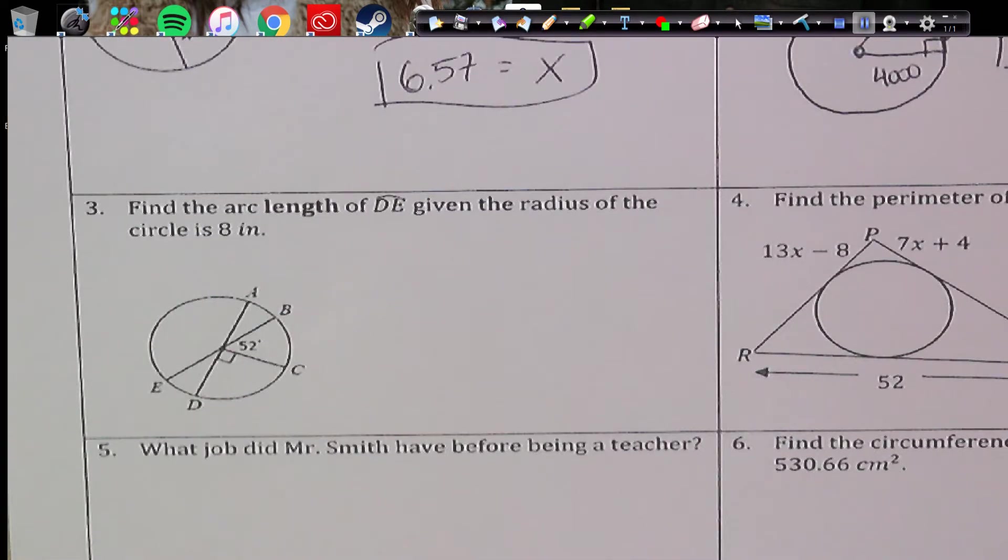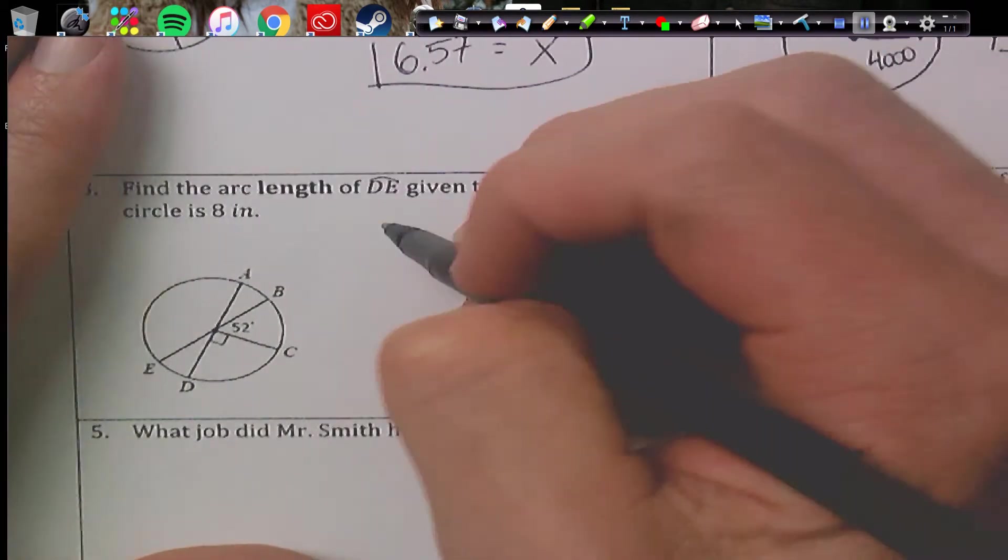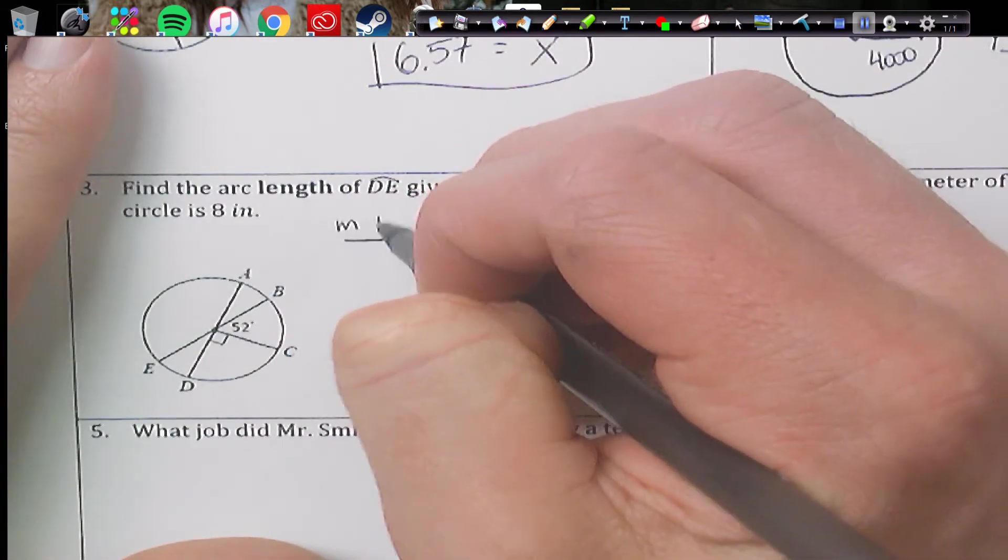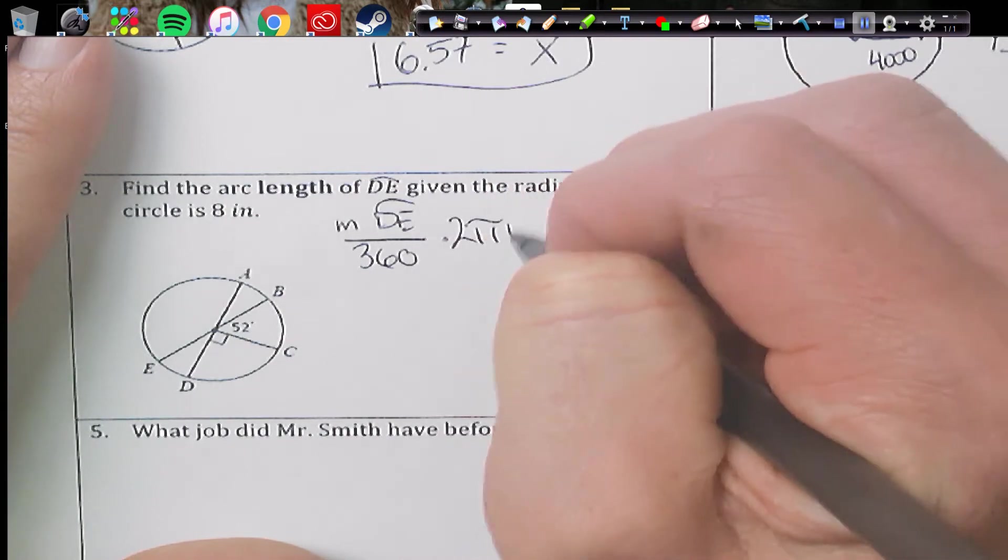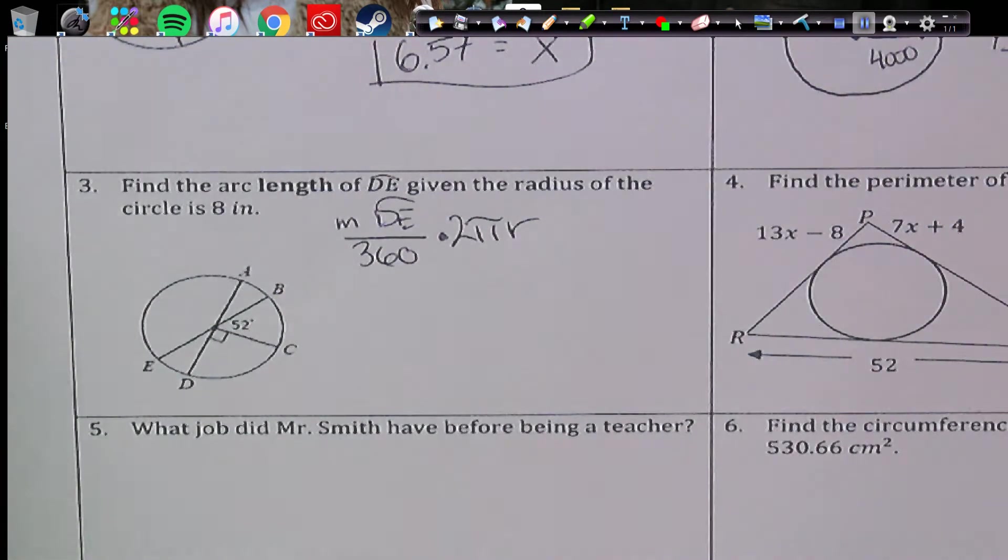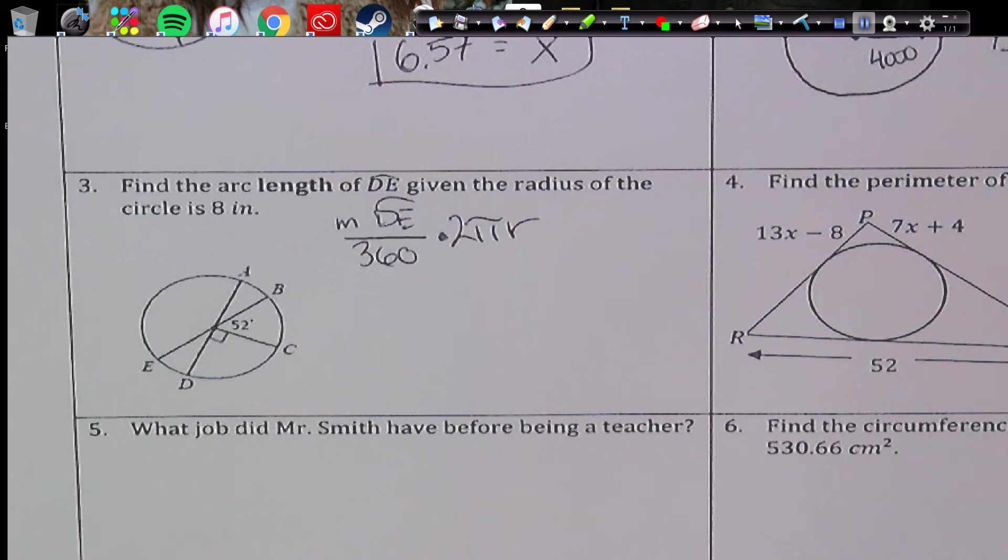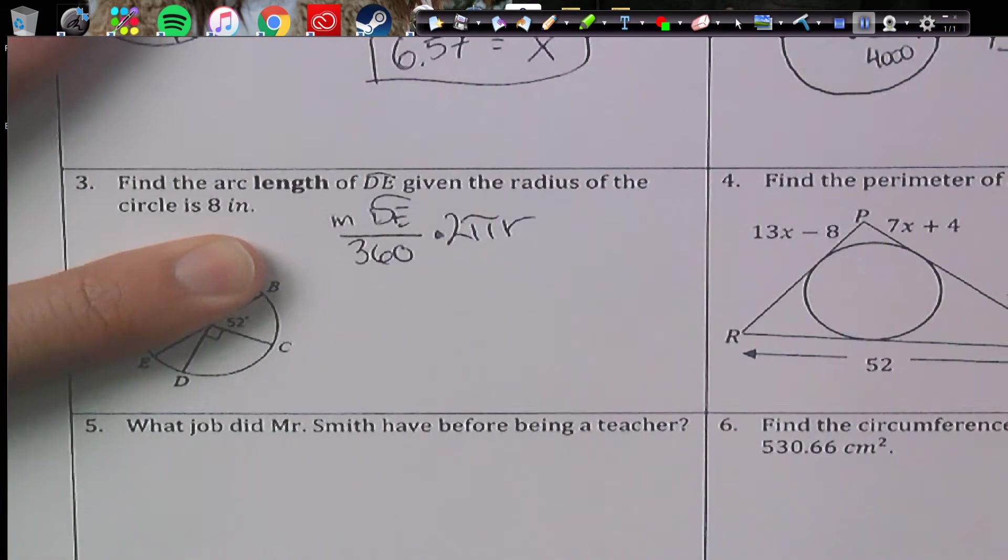Number three, find the arc length. Okay, so if you recall, arc length is going to be the measure of DE over 360 times 2πR. Arc length has to do with circumference. So the measure of DE, well, if I look at this right here, hopefully my finger's not fully in the way.